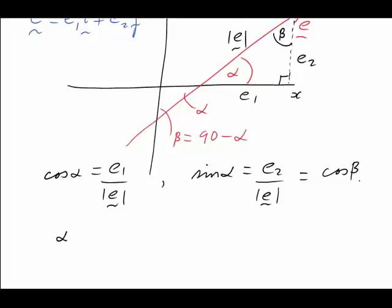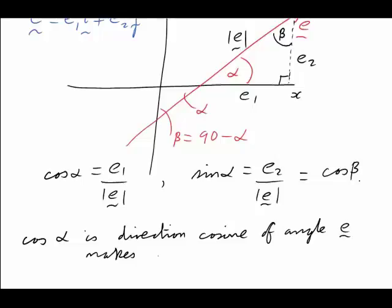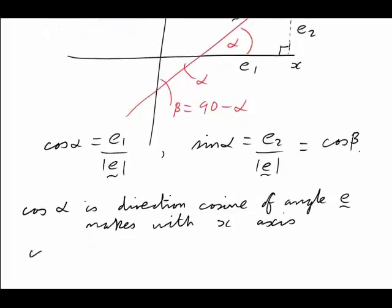Alpha is the direction cosine, sorry, cos alpha is the direction cosine of the angle that e makes with the x-axis. Similarly, cos beta is the direction cosine of the angle that e makes with the y-axis.